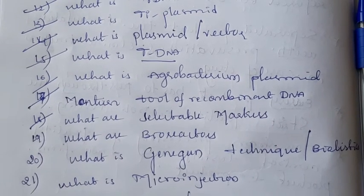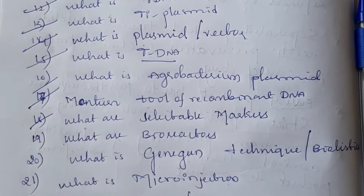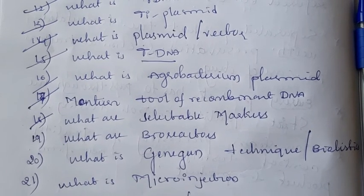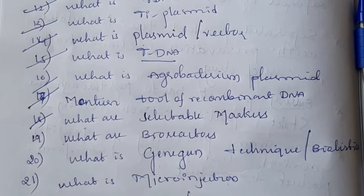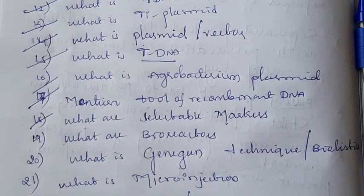Next question: what is gene gun technique or biolistics? Gene gun technique or biolistics is a technique that helps for the insertion of a gene of interest into the host organism. It is a physical method of insertion of a gene of interest into the host organism.